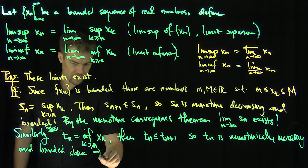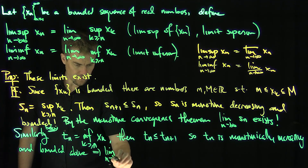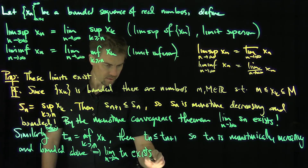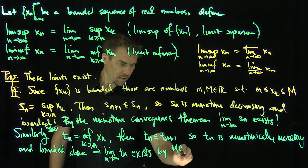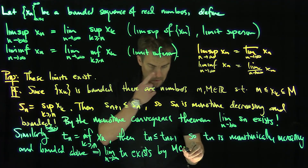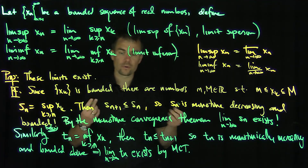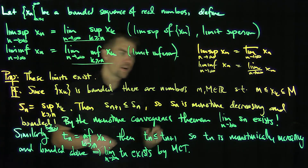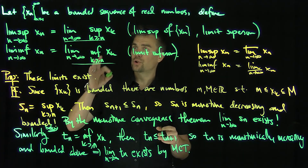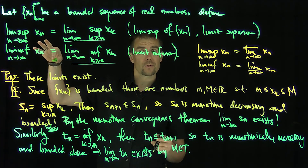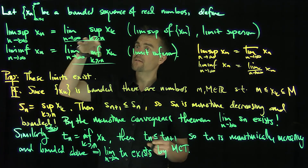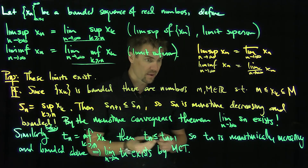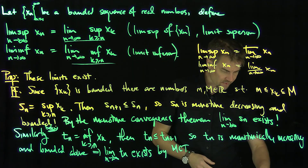That implies the limit as n goes to infinity of tn exists, by monotone convergence. In further videos, we're going to show that we can extract a subsequence of the original sequence that converges to the lim-sup, and a subsequence that converges to the lim-inf. Let's see a couple of quick examples.